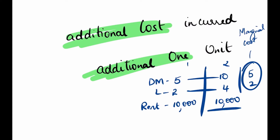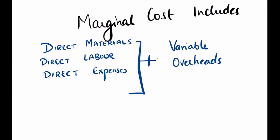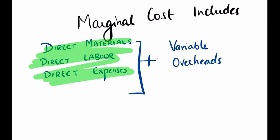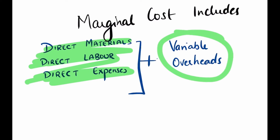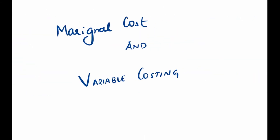Marginal cost is the additional cost incurred to produce one unit. Marginal cost includes prime cost — that is direct material, direct labour, and direct expenses — plus only the variable overheads. Fixed overheads are not considered under marginal costing. So marginal costing includes all my variable costs.